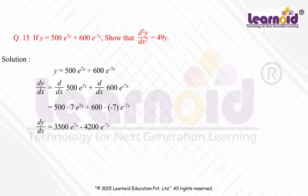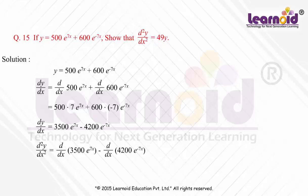Now, differentiating again with respect to x, d square y by dx square is equal to d by dx of 3500 e to the power 7x minus d by dx of 4200 e to the power minus 7x. On differentiating, we get 3500 into 7 e to the power 7x minus 4200 into minus 7 e to the power minus 7x.